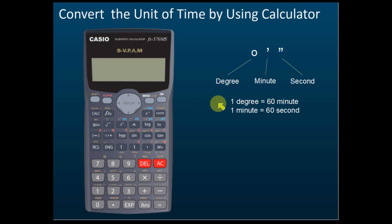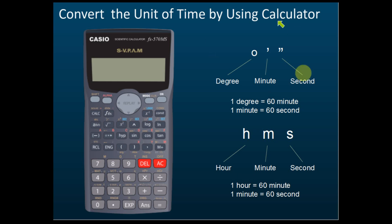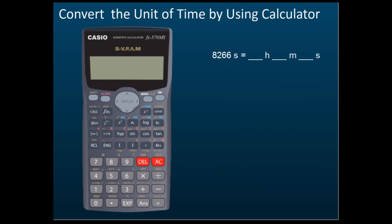If we compare to the unit of time: one hour equals 60 minutes, and one minute equals 60 seconds. For angles: one degree equals 60 minutes, and one minute equals 60 seconds. They are the same — the only difference is this is called 'degree' and that is called 'hour.' So you can use the degree-minute-second function for time unit conversions.